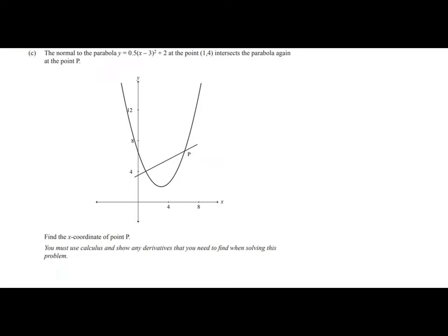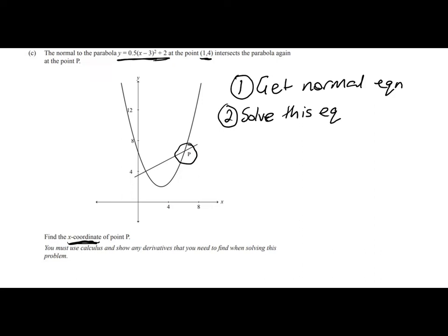Okay, this question is a little bit more involved. We're given a curve, a parabola here, and we're told that the normal to the parabola at the point 1, 4 is going to intersect the parabola again at the point P, and they've very nicely drawn you a picture of that. What we have to do is to find the coordinate, the x-coordinate only of point P. So let's think about the steps. Well, we need to find the equation of the normal to the curve. So that's going to be step 1, and that's quite a big step. So get the normal equation.